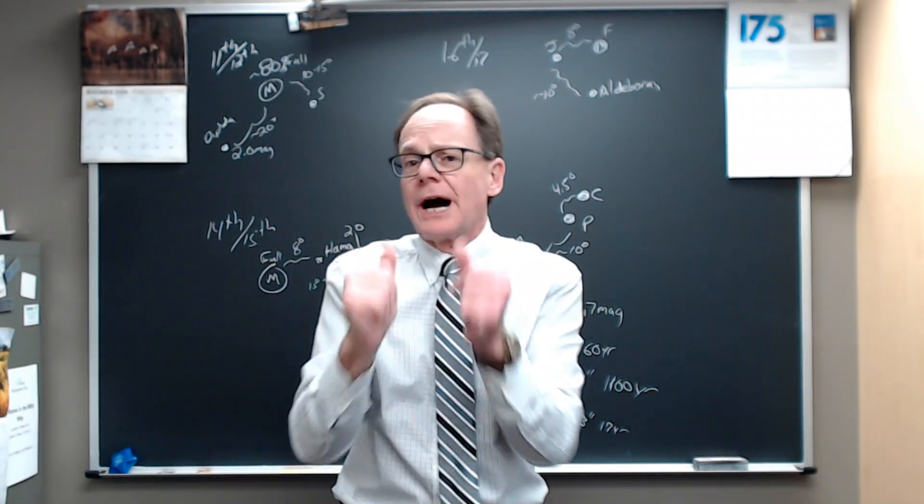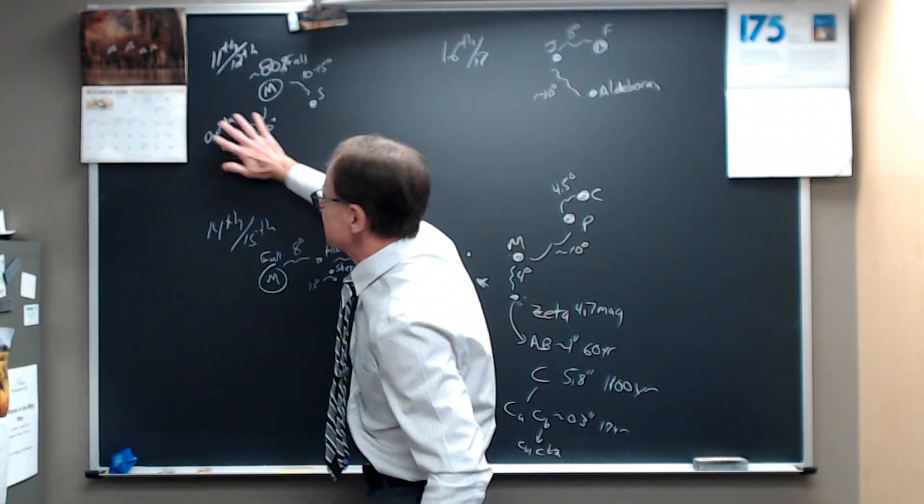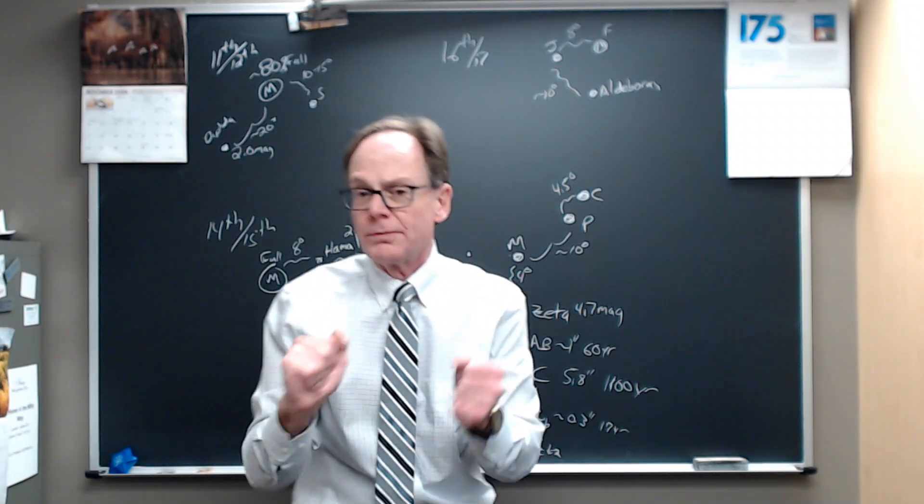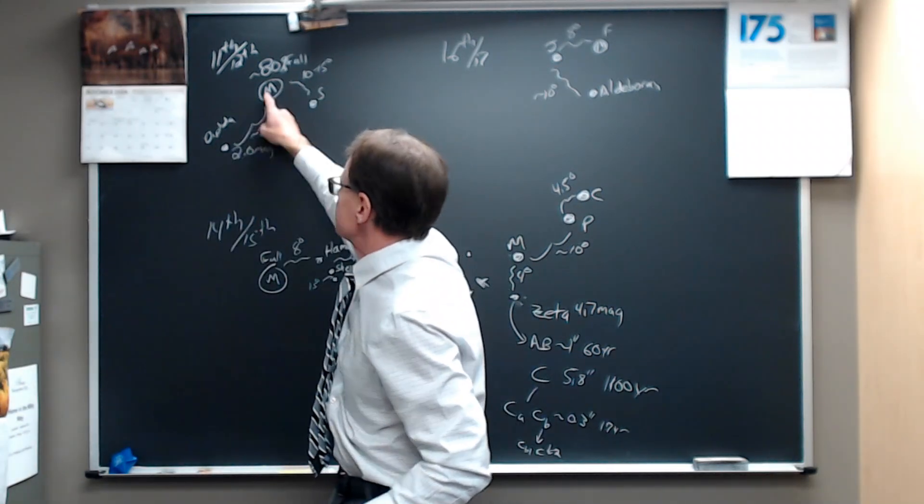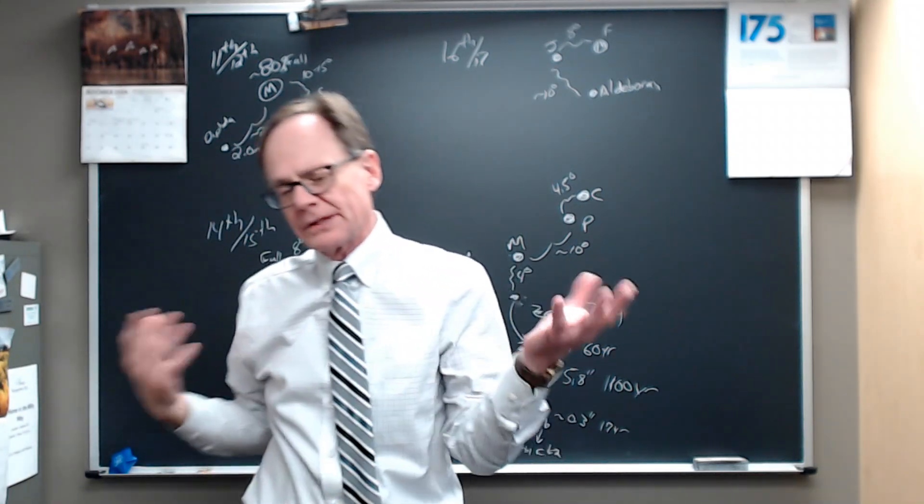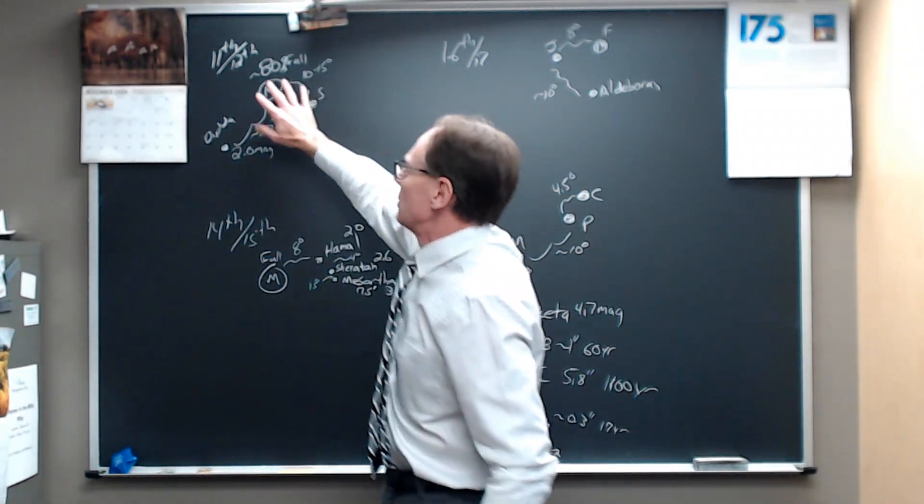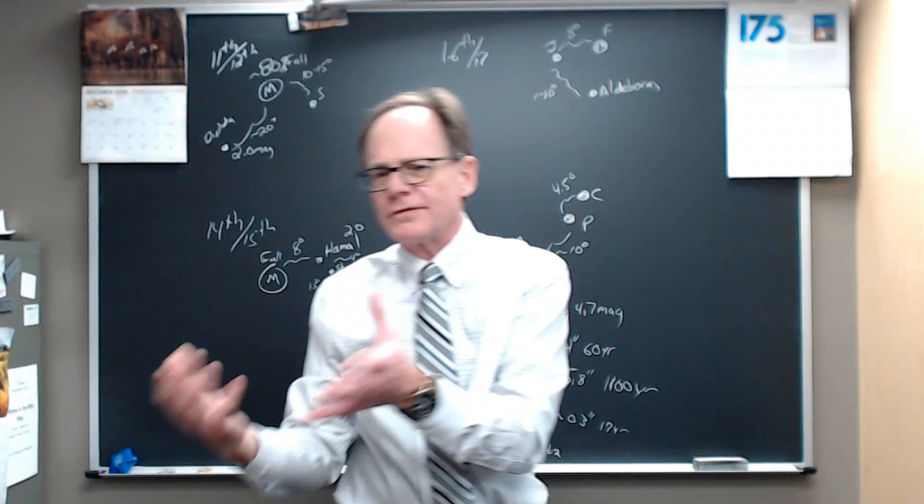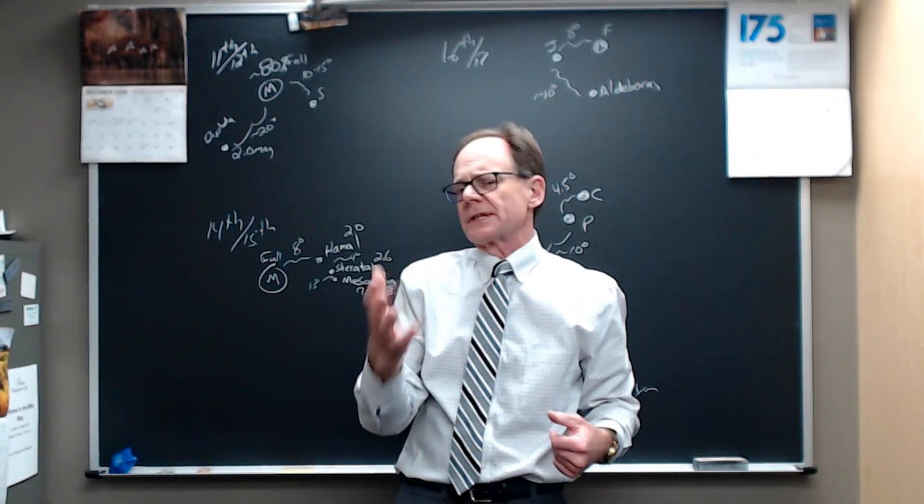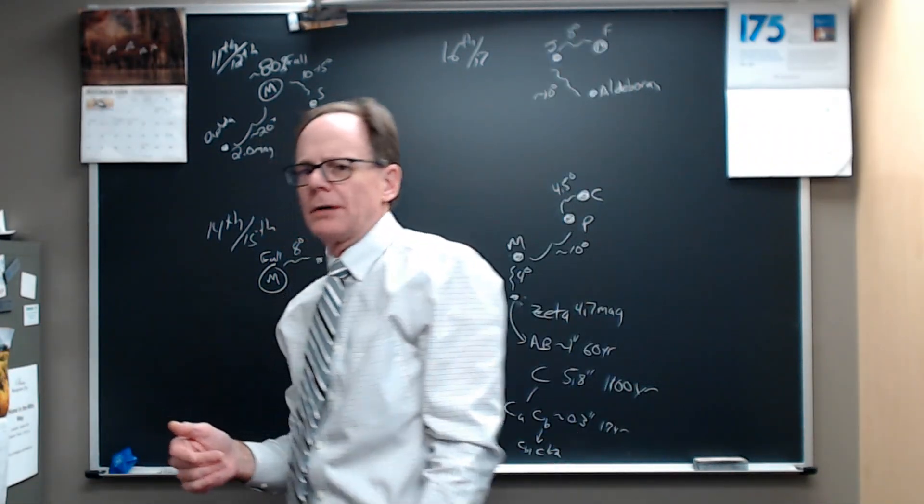So these are good objects. If you've not observed Cetus, the constellation of Cetus, the sea monster at all before, Diphtha is a great place to start, and you've got a nice guide to it right there. So that's what we look at on the evening of the 11th into the morning of the 12th. Again, we're so close to full, you can do this observing after dark, as soon as the sun sets, right on up until almost sunrise.